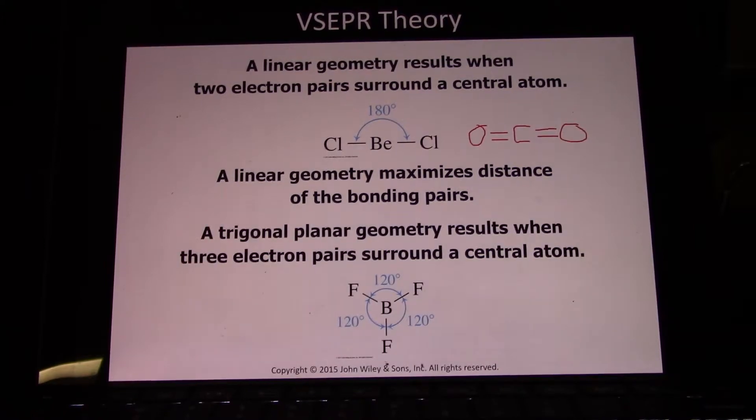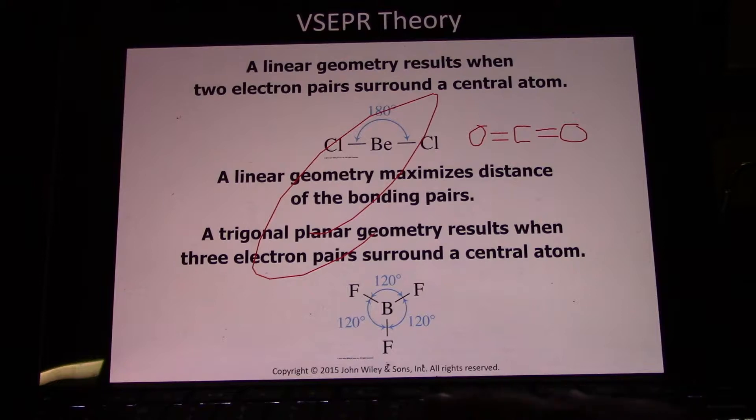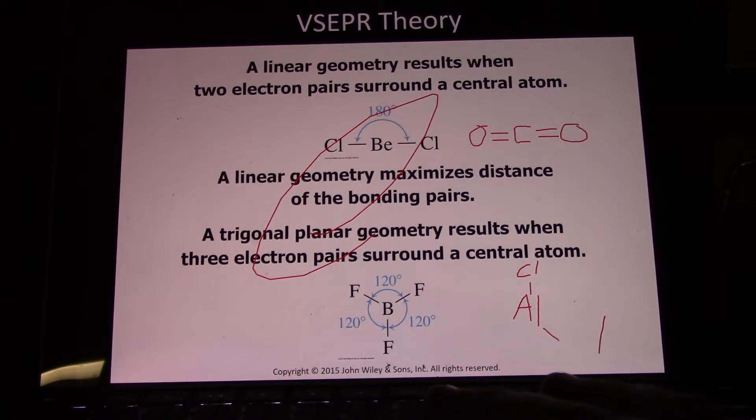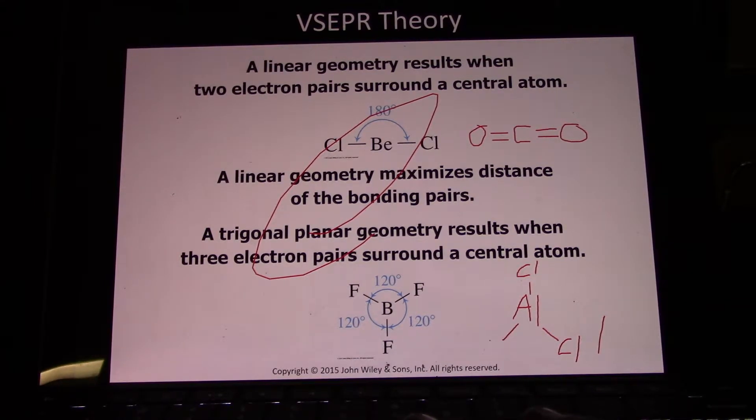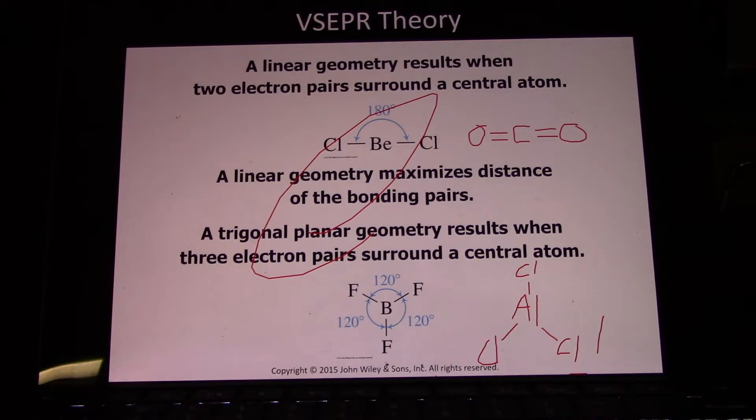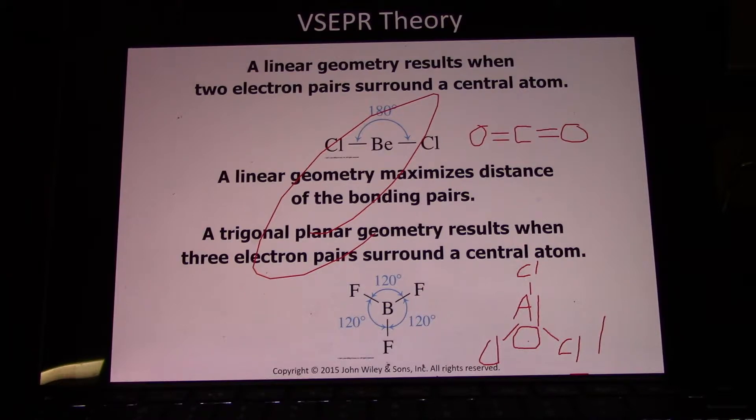With boron trifluoride, we have three groups. This happens with boron trifluoride and also with aluminum trichloride, AlCl3. Both of these are super useful in chemistry because they only have six valence electrons coming off the central atom—they want eight, so they'll grab onto two electrons and catalyze the reaction pretty quickly. Aluminum and boron are great Lewis acids and Lewis catalysts because they're electron deficient. When you only have three electron groups around the central atom, the furthest apart they can get is 120 degrees from each other.